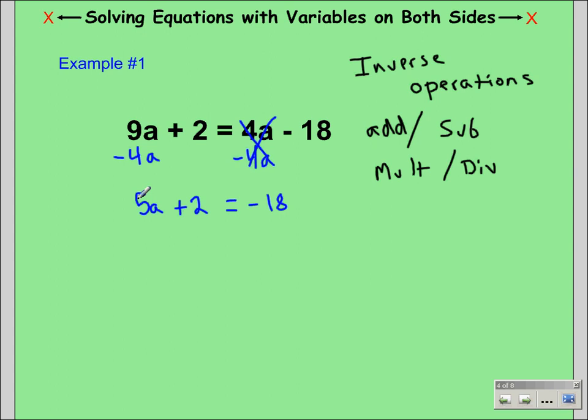Because we have all of our a's on the left side, we're going to move our positive 2 to the right side of our equation. By using inverse operations, the inverse of positive 2 would be negative 2. Canceling out our 2, we're left with 5a on the left side and negative 18 minus 2 gives us negative 20.